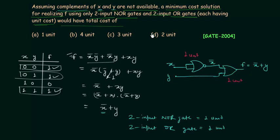We can easily estimate the cost of this circuit: one unit for the NOR gate and one unit for the OR gate — one plus one equals two units. So option D is the correct option. This is all for this lecture. See you in the next one.